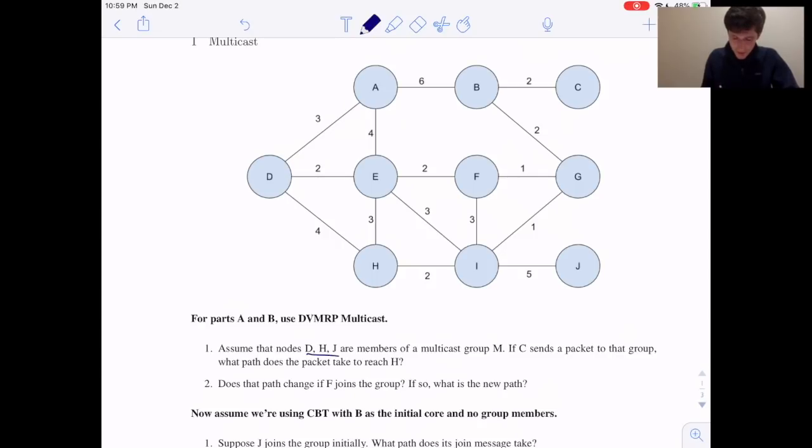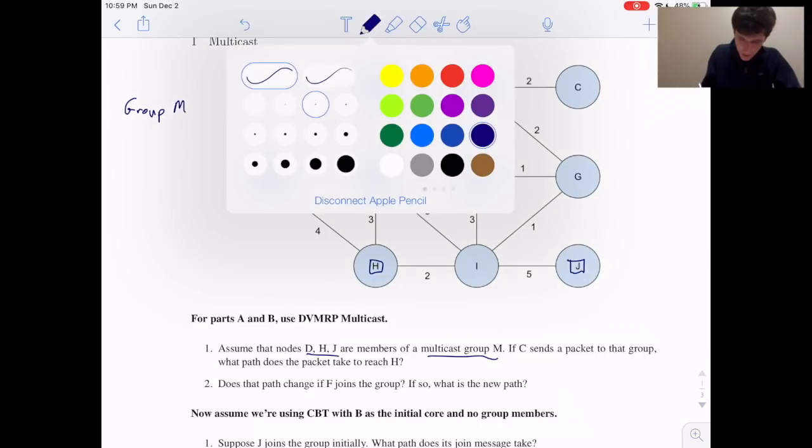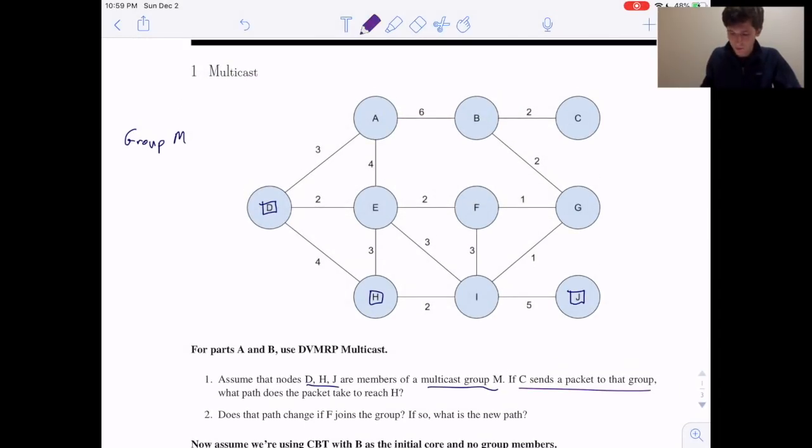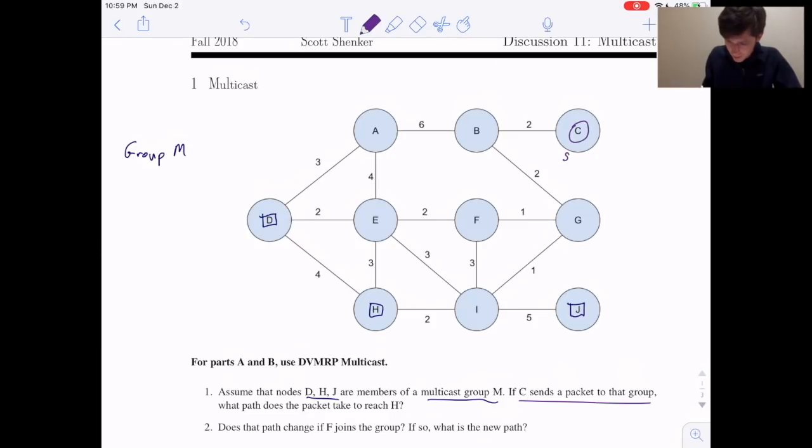Starting with part one, we're told that D, H, and J are members of a multicast group M. We have D, H, J that are all members of group M. And we're also told that C wants to send a packet to this group. So C is our sender. Notice that C wants to send to the group, but is not a member of the group. In multicast, non-members can also send to the group. You don't have to be a member to be able to send to the group.